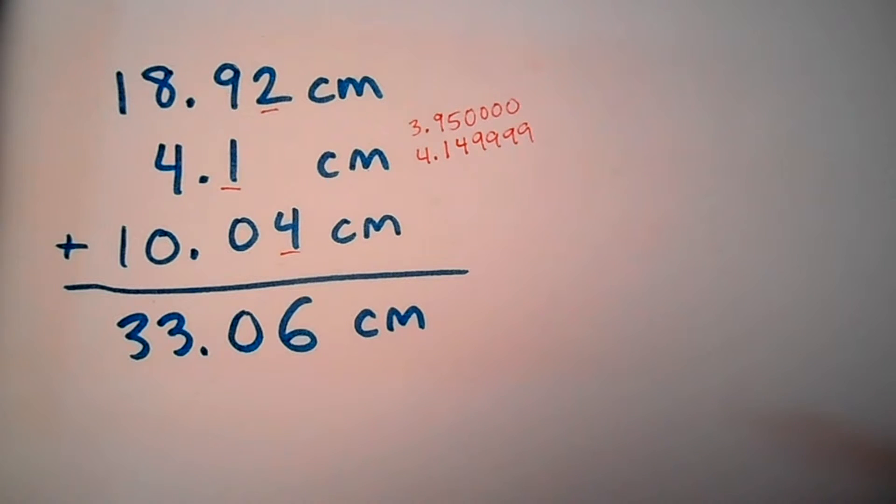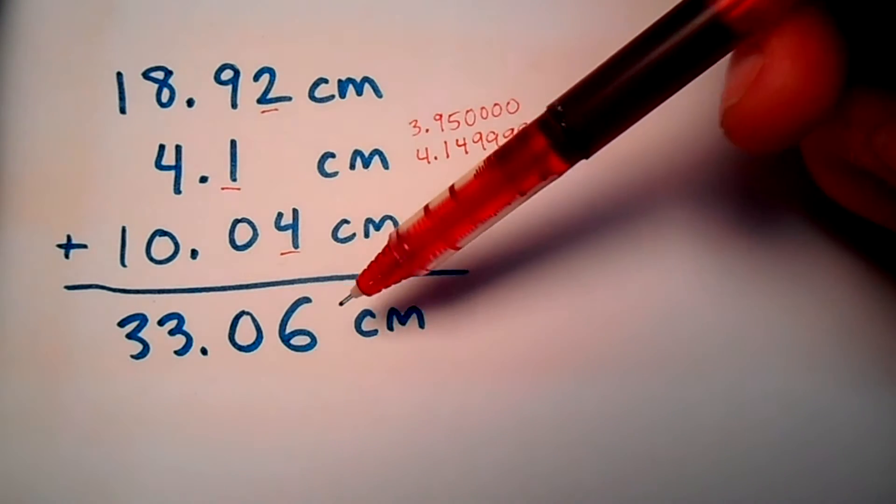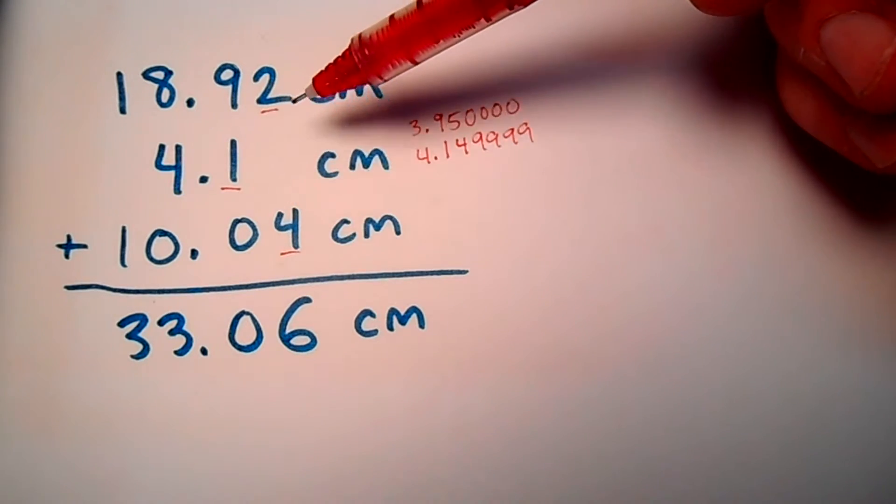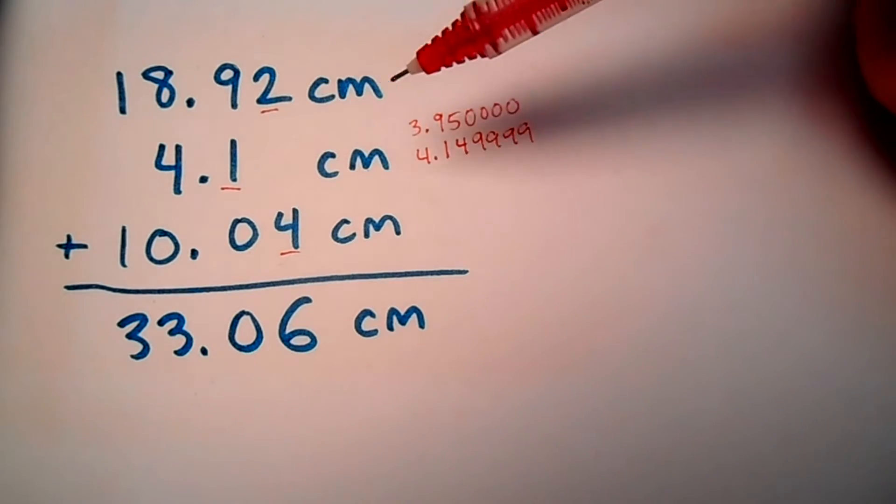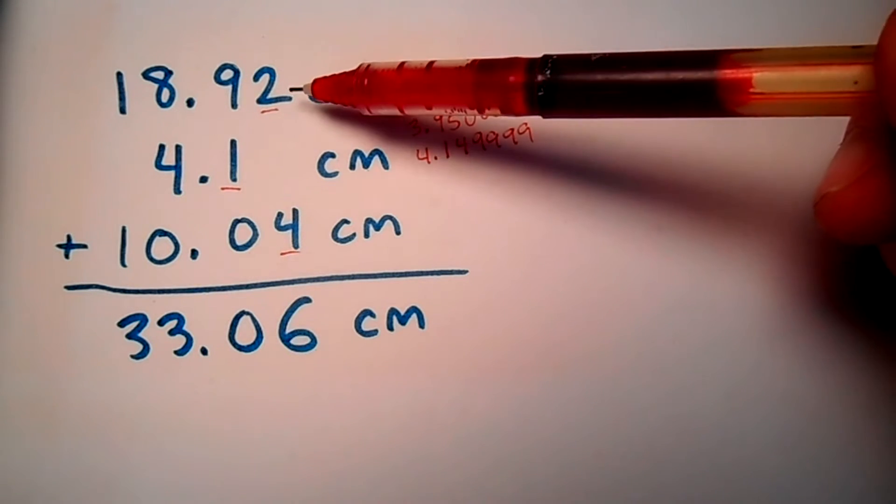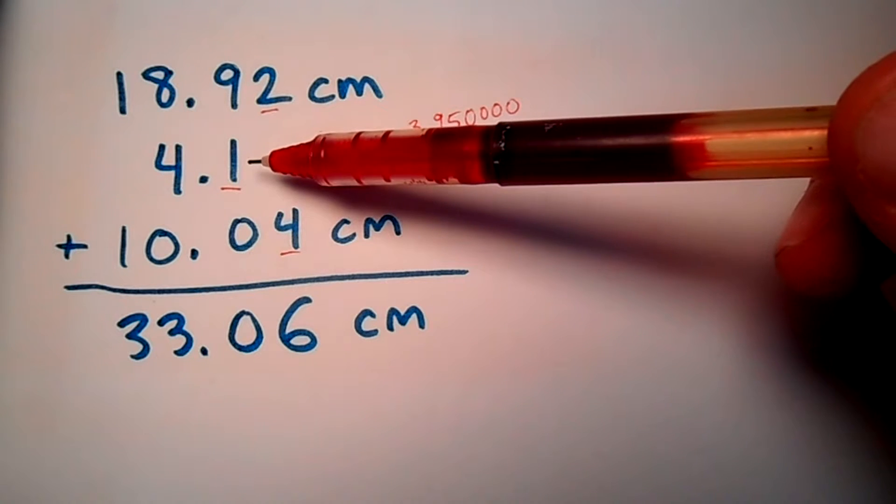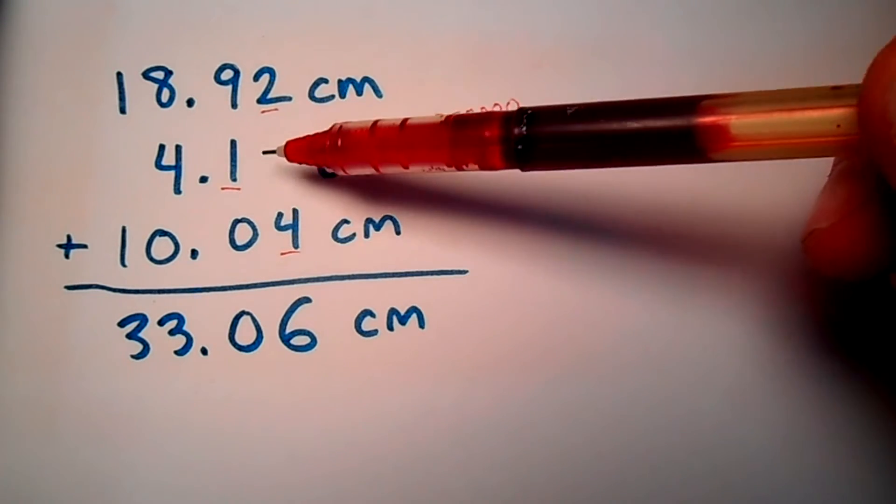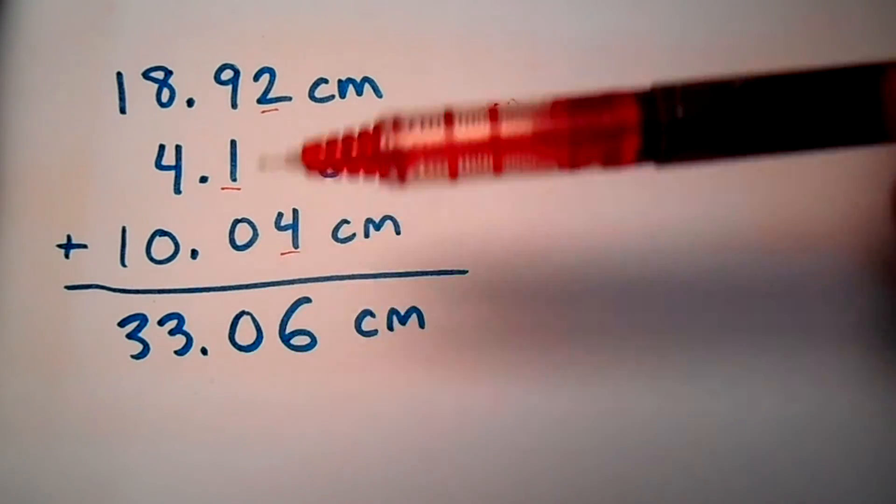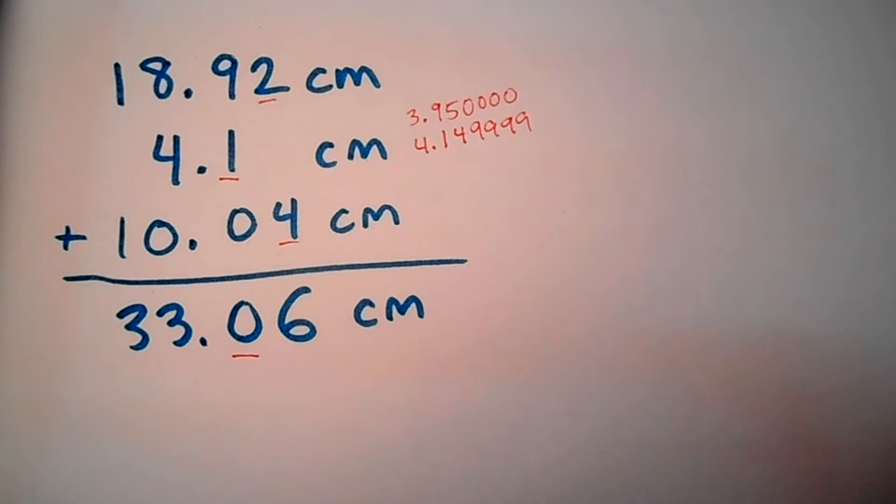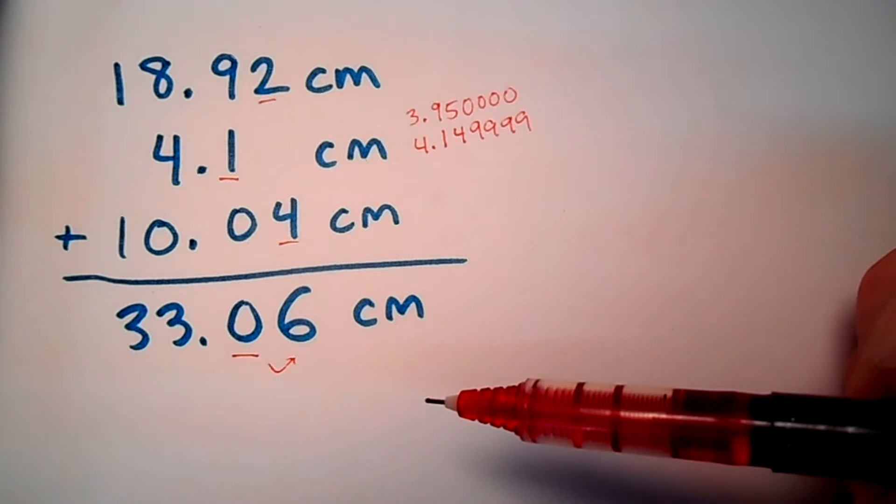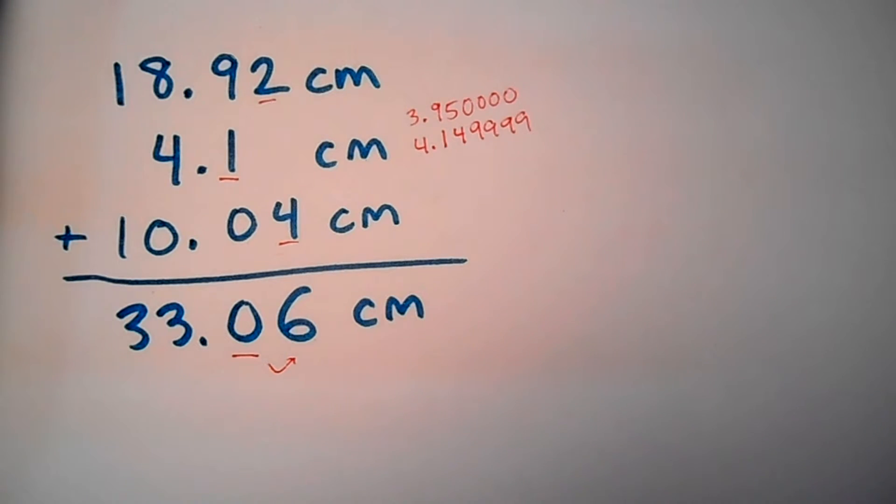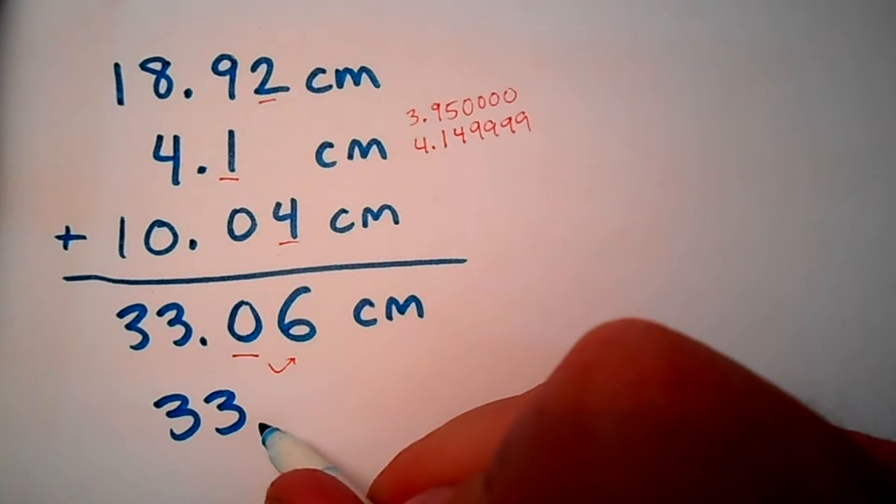The rule for adding and subtracting and how you round with your significant figures is: you will round your answer to a place value that was the least precise place value in the numbers that you added or subtracted together. We know the precision of this first number to the hundredths place. The second number, we know its precision only to the tenths place. And the third number, we know precision to the hundredths place. So it's the tenths place which is the least precise. That means our answer must be rounded to the tenths place. Since this is 5 or above, it's a 6, we round up by 1. So we're going to call this, once it's rounded with sig figs, 33.1 cm.